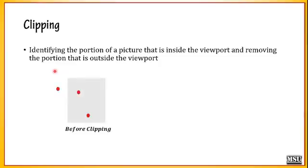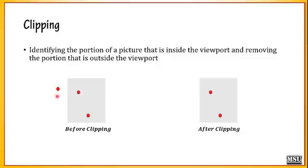Let us consider an example. Here we consider this is a window, and we are having three different points located. Before clipping, two points are located inside the window and one point is actually outside the window. After the process of clipping, that outside point is clipped. The two points inside are included and the remaining third point is clipped. That is the process we are calling as Clipping.